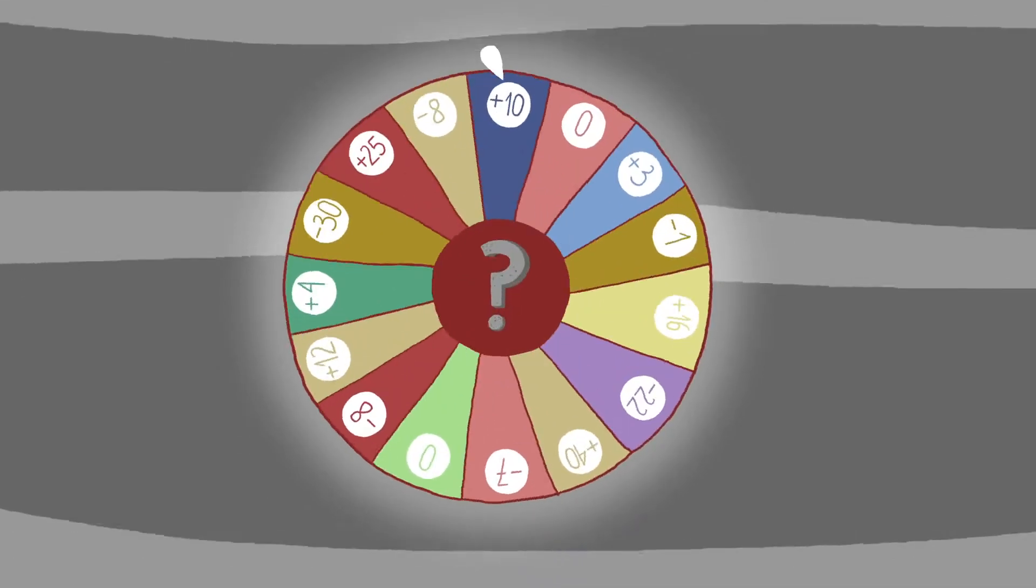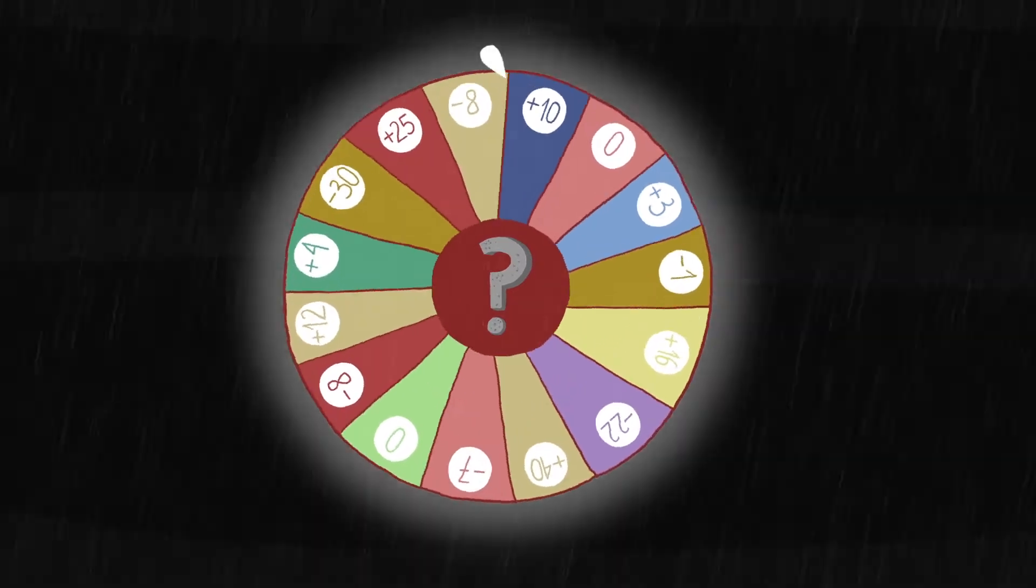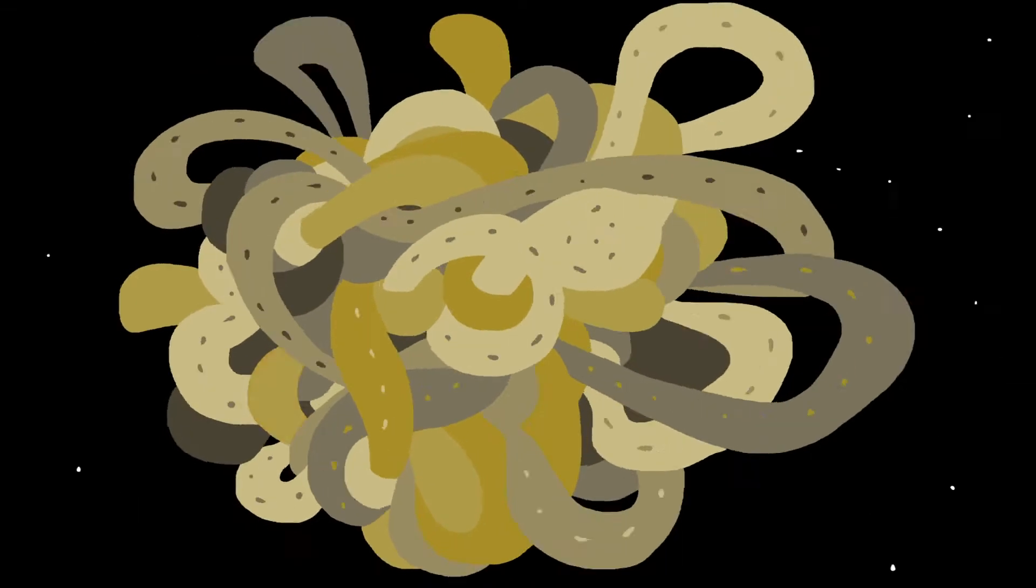But even then we can't be completely sure what the temperature will be next Saturday. At that level of precision, the weather is chaotic and emergent. It's seemingly rather complex.